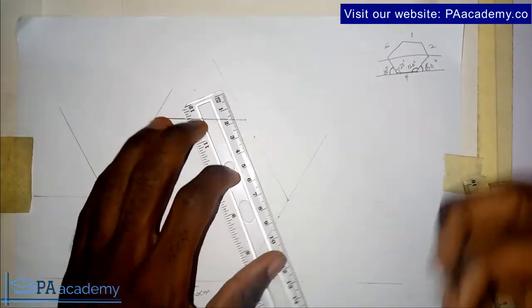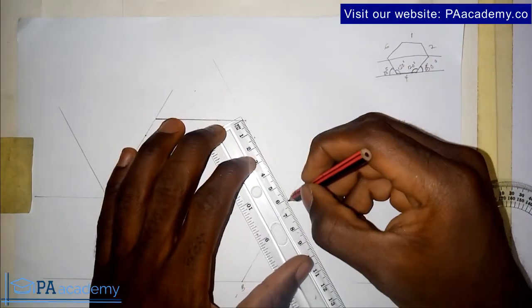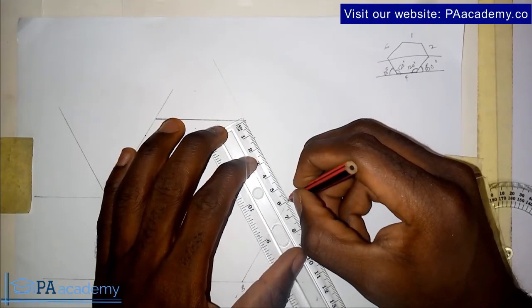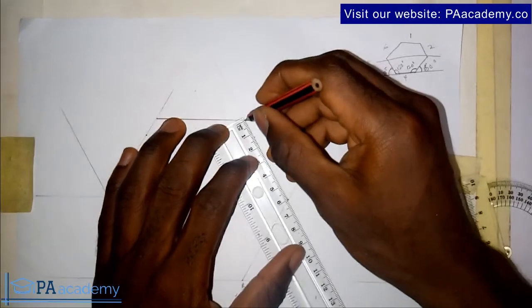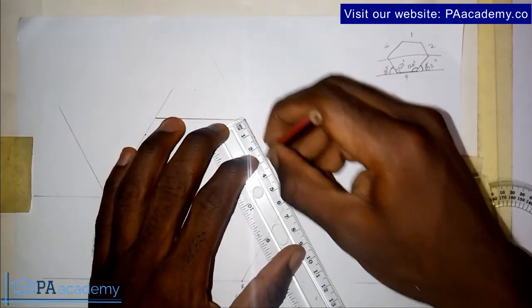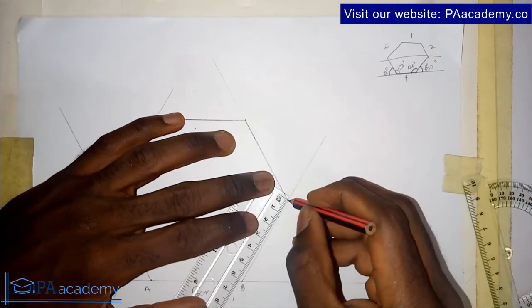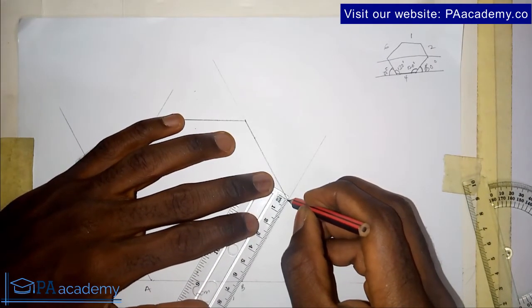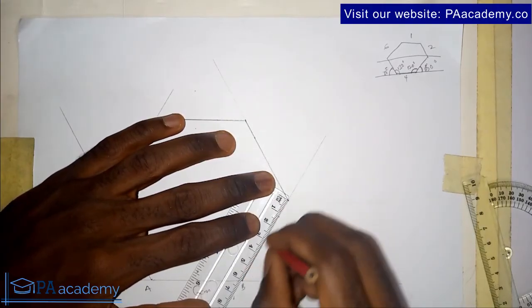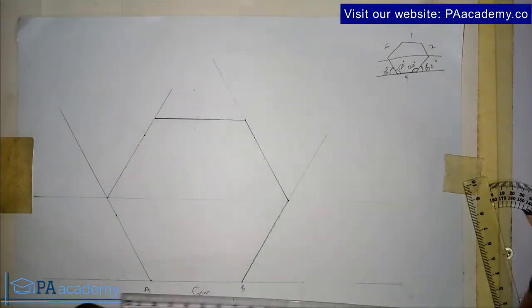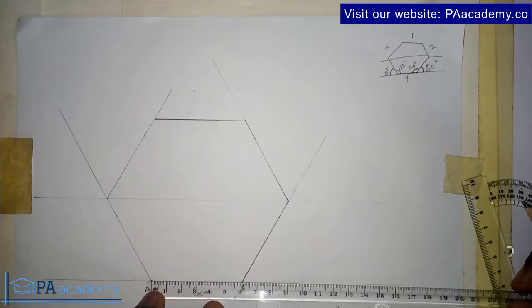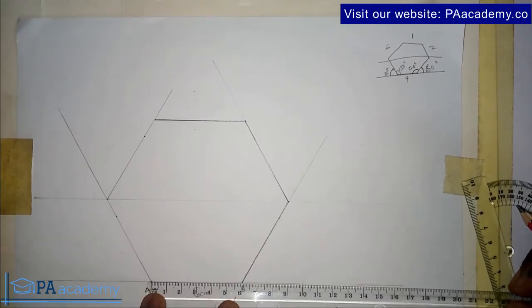Now let me just make the lines bold. The main hexagon itself, let me make the lines bold. You can see that all the sides will be 6 centimeters.